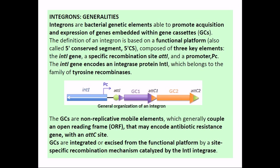Some gene cassettes are placed under a promoter and some are not — a promoter can be present or not. The functional platform of integrons is made up of three key components: one is the intI gene — as you can see in this picture, this is the intI or integron I gene — a specific recombination site called attI or attachment I site, and a promoter sequence called Pc.